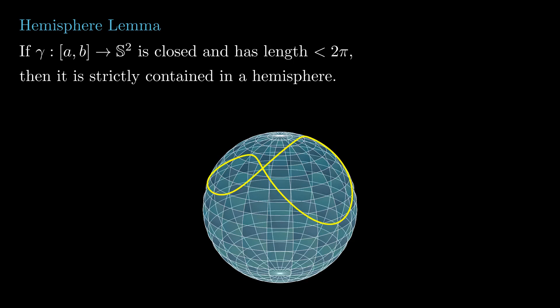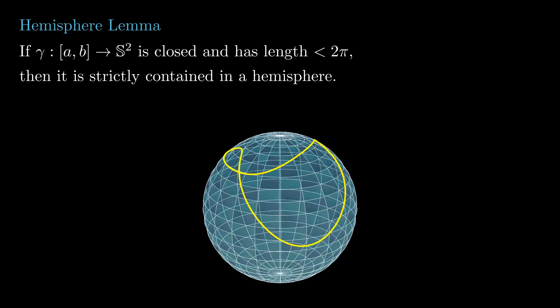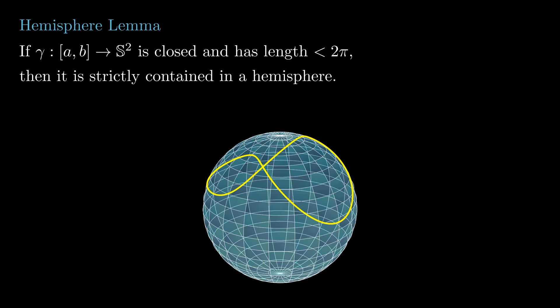It says that if you have a spherical curve gamma whose length is strictly less than 2π, then it is strictly contained in a hemisphere. We present here a very elegant proof due to Stephanie Alexander.